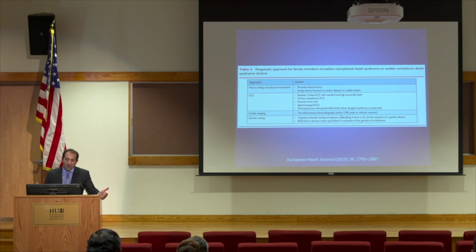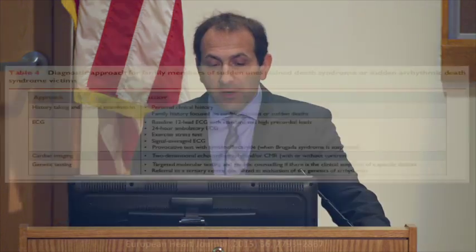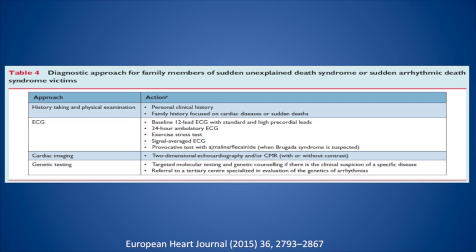If someone presents and says their sibling had sudden unexplained cardiac death, you should get a personal history on that patient and a family history focused on cardiac diseases and sudden death. Workup typically includes a 12-lead ECG, 24-hour ambulatory ECG, and perhaps an exercise stress test. Provocative testing in the EP lab — we use flecainide to assess for Brugada syndrome, which brings out the Brugada pattern. A high precordial lead ECG, moving V1 and V2 up a couple of intercostal spaces, can also bring out the Brugada pattern. Cardiac MRI is a good tool to assess for any infiltrative process or scar in the myocardium. And clearly, genetic testing and referral to a genetic counselor.